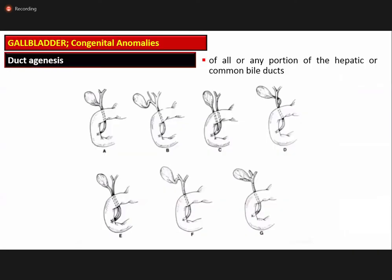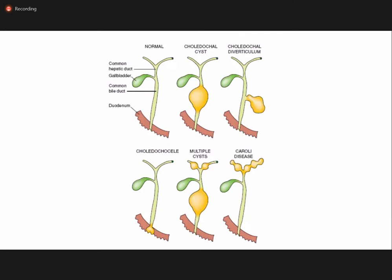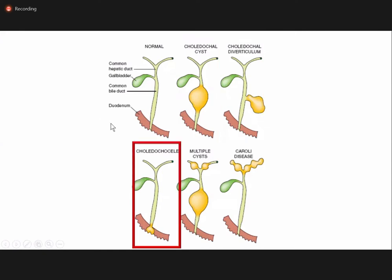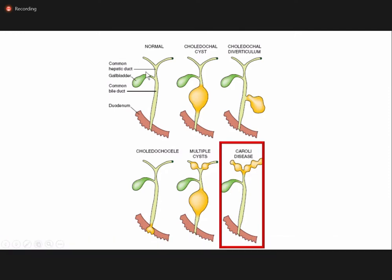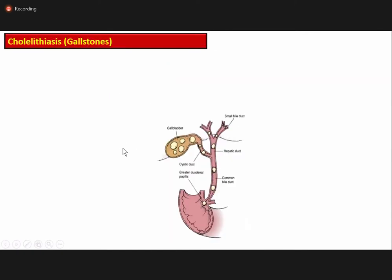Duct agenesis is another congenital anomaly in which there is non-development of all or part of the hepatic or common bile duct, with hypoplastic narrowing of the biliary channel — this is true biliary atresia. Bile duct anomalies include duplication and accessory bile ducts. Congenital bile duct dilations are termed choledochal cysts, present in 85 percent of all bile duct anomaly cases. Multiple cysts as segmental dilatation of the entire extra-hepatic biliary tree, and similar intra-hepatic dilations, are termed Caroli disease, which predisposes to bacterial cholangitis.